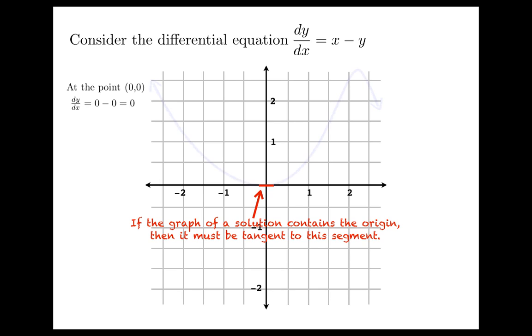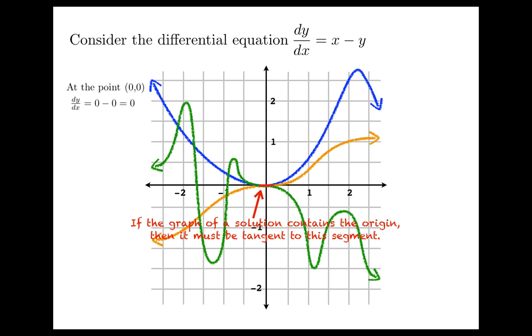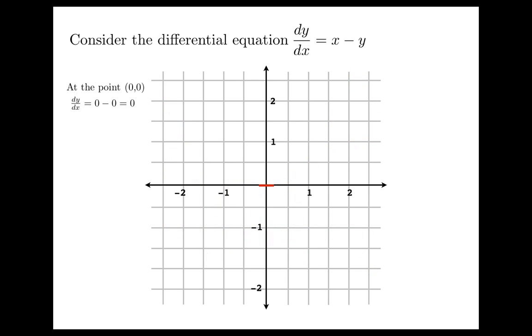So a solution might look like this. Maybe it looks like this. Maybe it looks like this. But in any case, it's got to go through the origin tangent to that little segment. Now that's not really enough information to whittle down the possibilities.